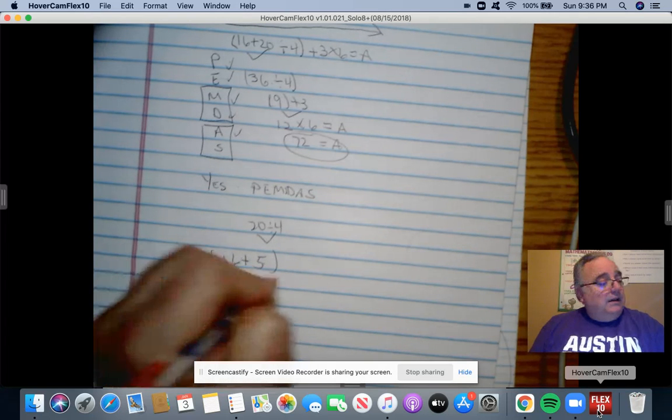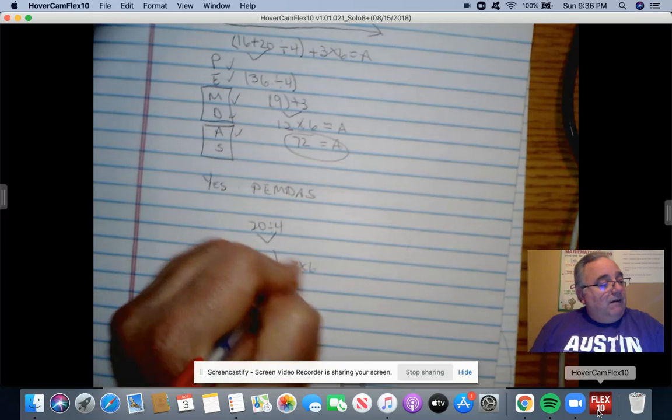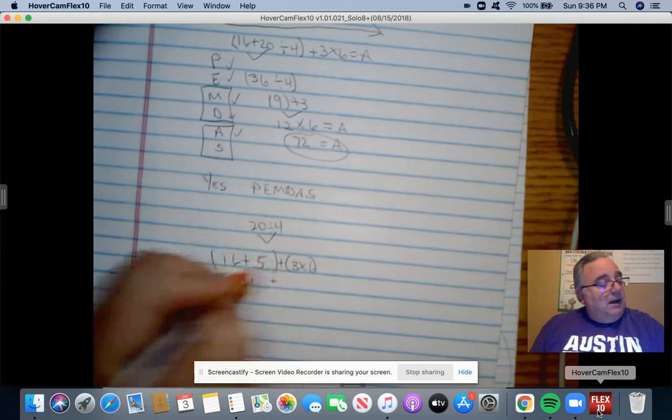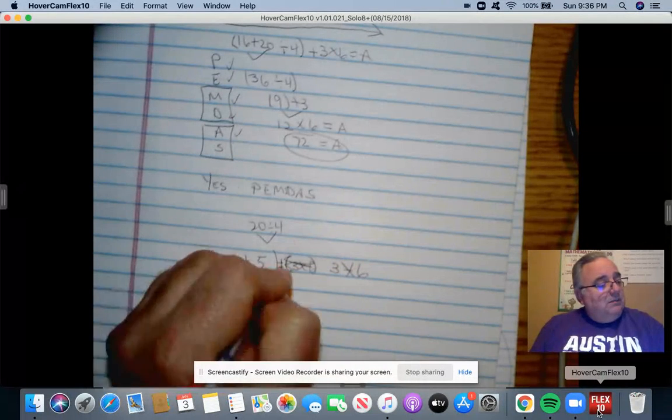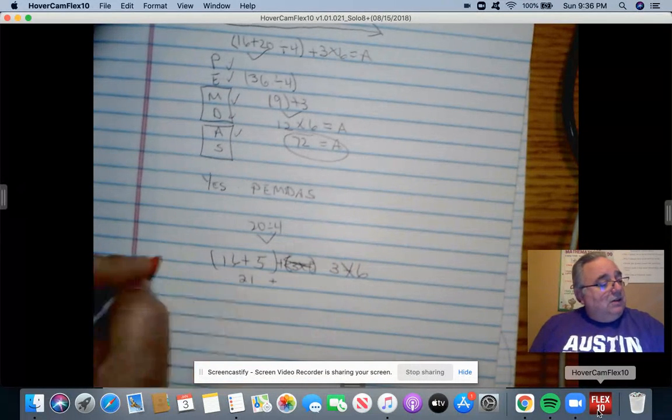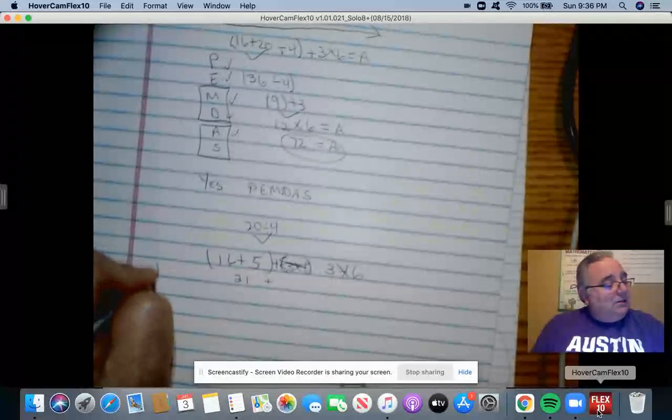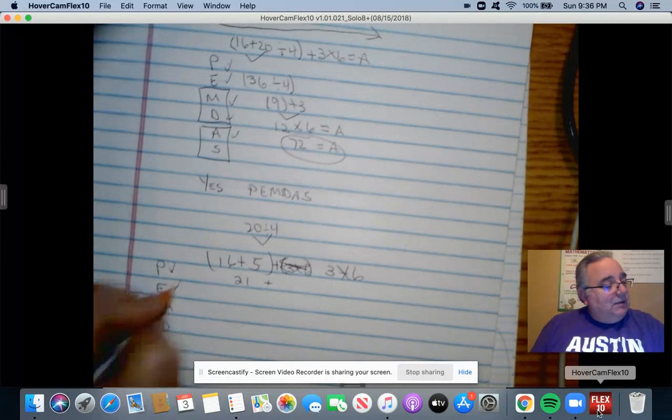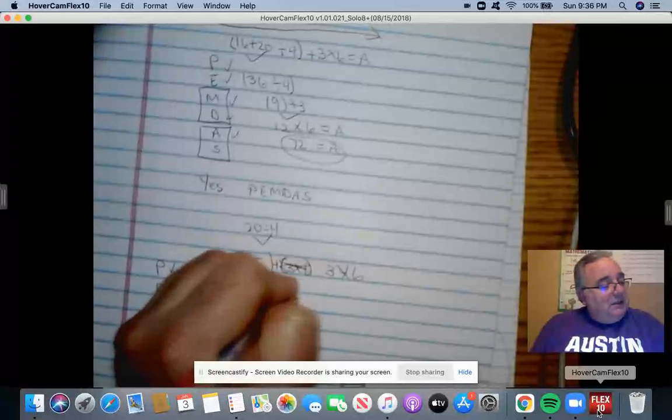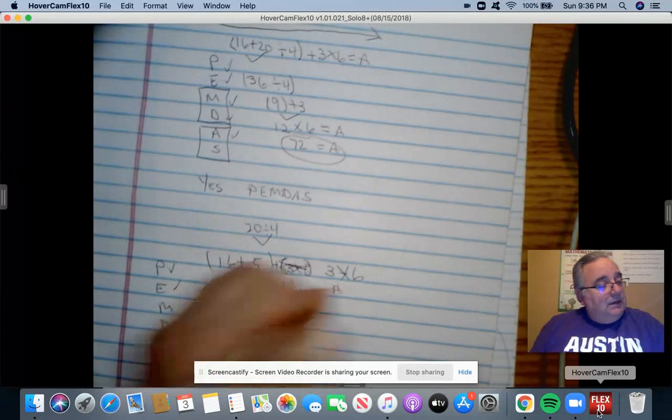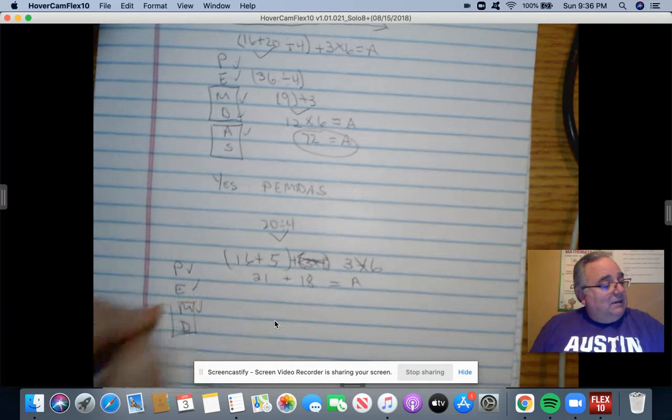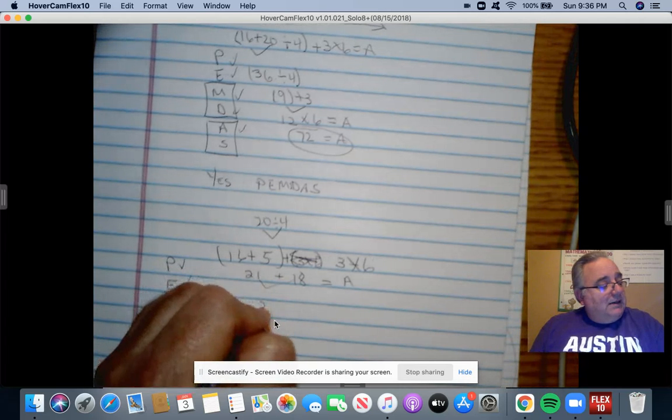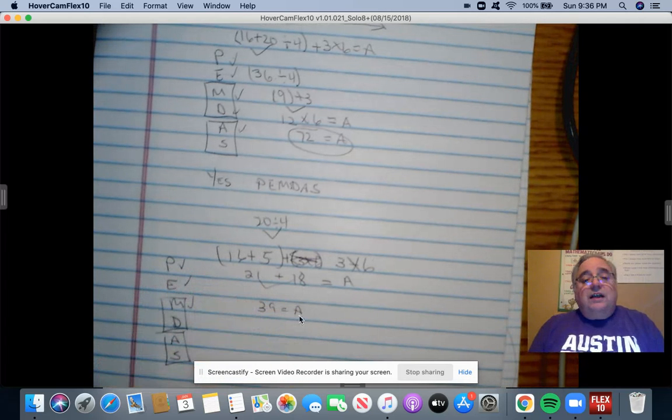All right. Then I have, if I'm following PEMDAS, I actually have 3 times 6 here, plus 3 times 6. So the next thing I have to do is multiplication, PEMD, because we got that. So that gives me 18. All right. That took care of that square. Now I have to add or subtract. I'm adding. That gives me 39. So the answer should be 39.